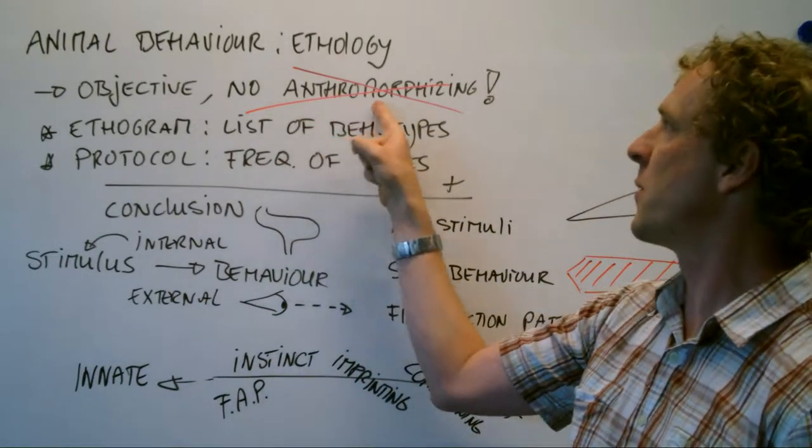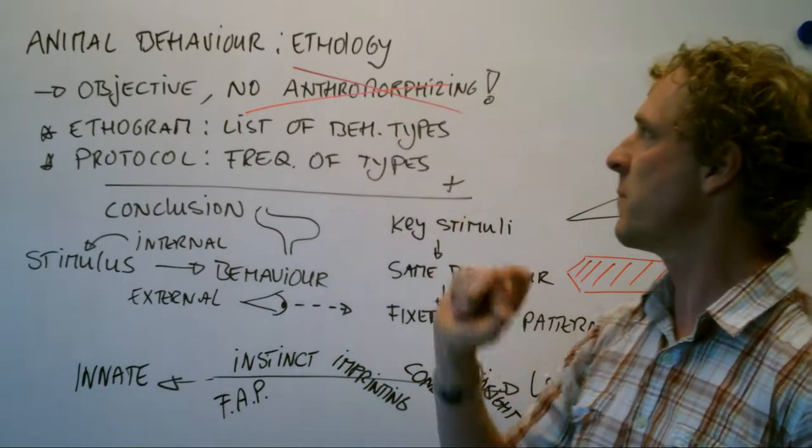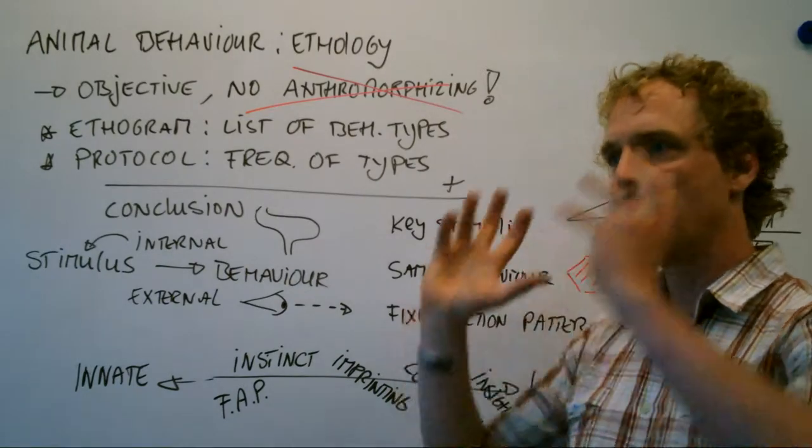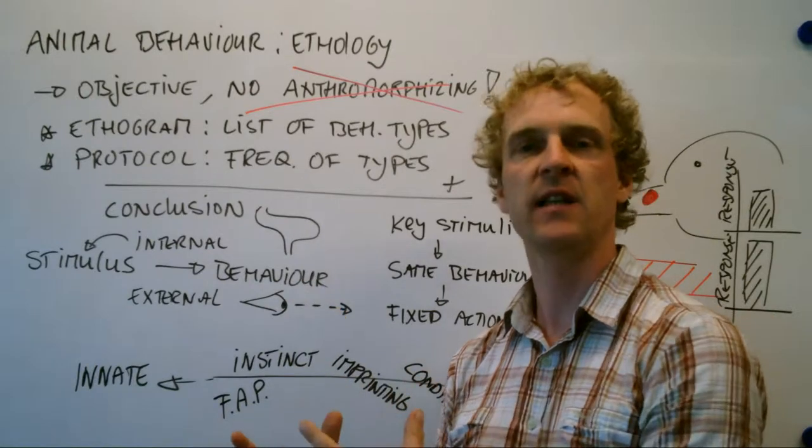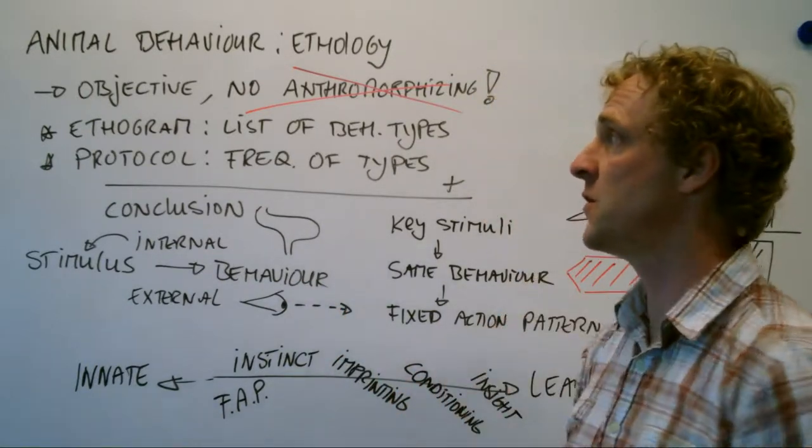So no anthropomorphizing and that's a very neat word for hangman. If you ever play hangman, remember the word anthropomorphizing. So you can't put your mind onto the dog or into the dog and you have no idea if the dog really likes you or not. So you're not allowed to do that.